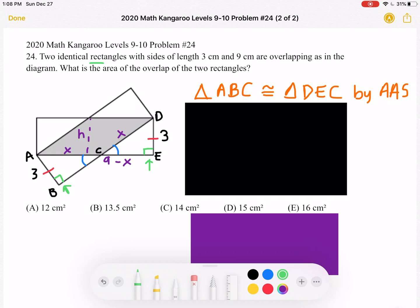Because we have rectangles, and rectangles all have 90 degree angles. And similarly, we know that AB is 3, because our rectangle is 3 by 9, and DE is also 3.